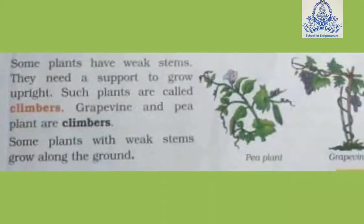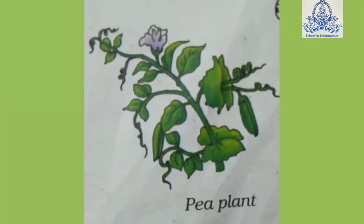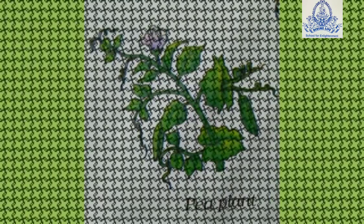Some plants cannot stand straight. They are weak and need support to grow straight. Sometimes they take the support of sticks. Such plants are called climbers. For example, pea plant and grapevine.